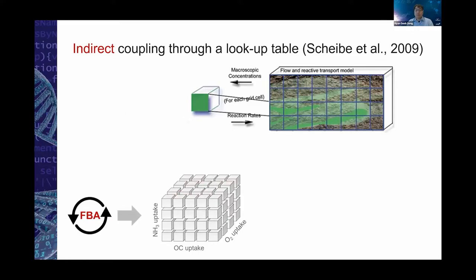Tim and his team developed a nice elegant idea to couple FBA with reactive transport modeling through a lookup table. The lookup table works like this: instead of running FBA at every time step for every grid cell, we run FBA over the possible range of input fluxes in advance, generate the results, and store every input flux and output reaction as a table. It's not really a two-dimensional table — it's a multi-dimensional table depending on how many fluxes are taken as input, forming an N-dimensional hyperspace of table entries.